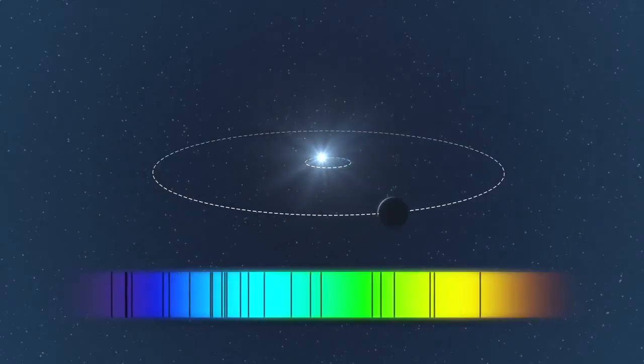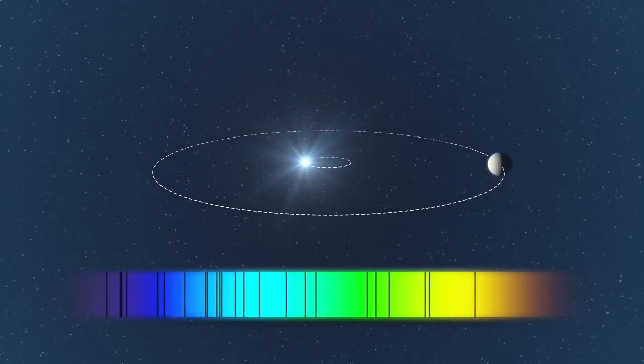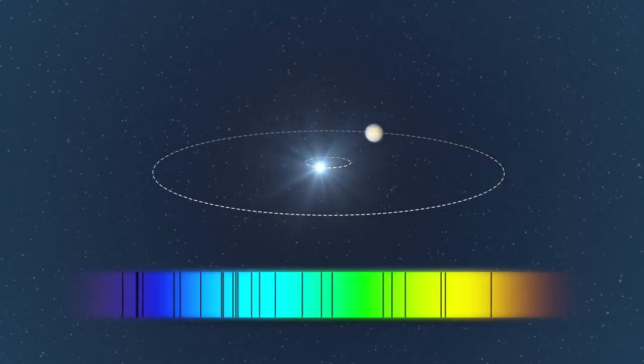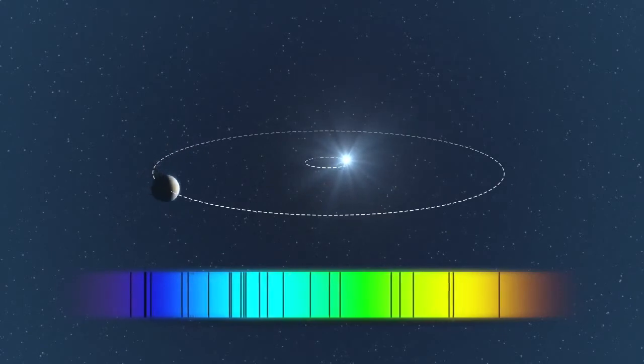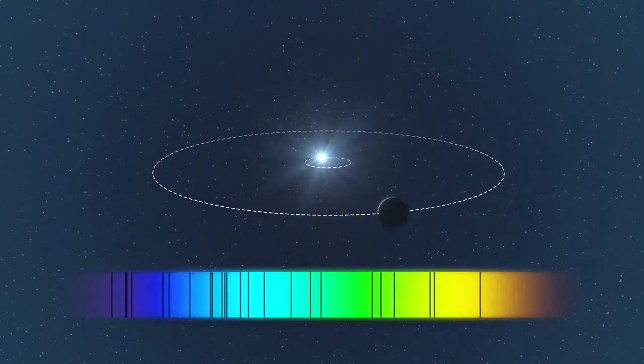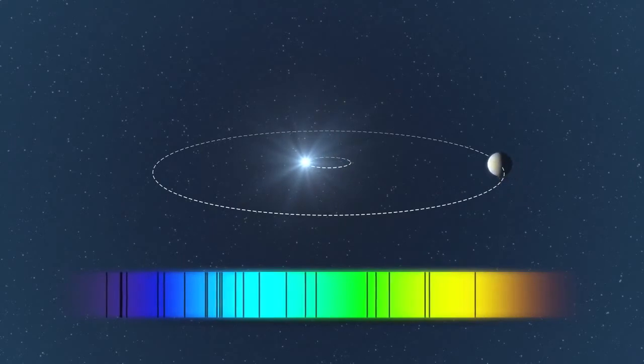A planet in orbit causes its star to regularly move backwards and forwards as seen from Earth. This creates a tiny shift of the star's spectrum that can be measured with an extremely sensitive spectrograph such as HARPS.